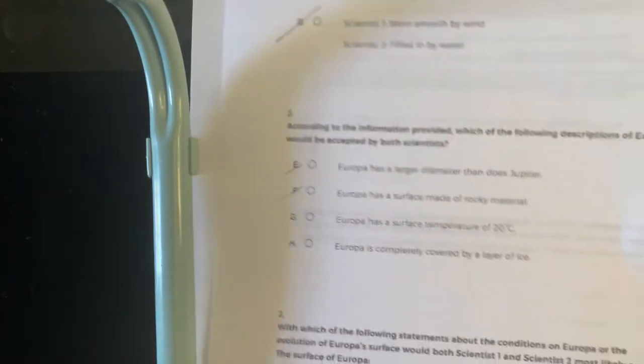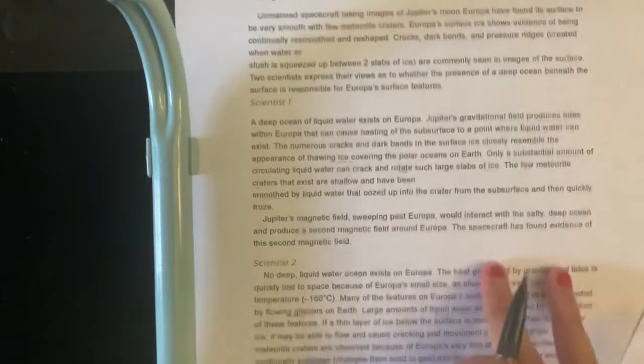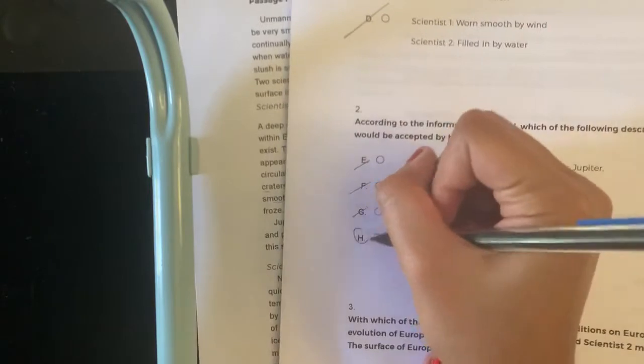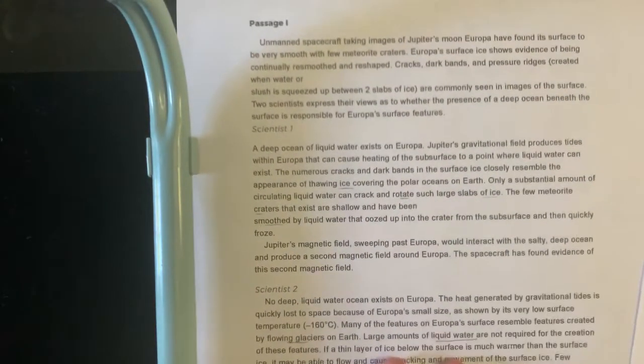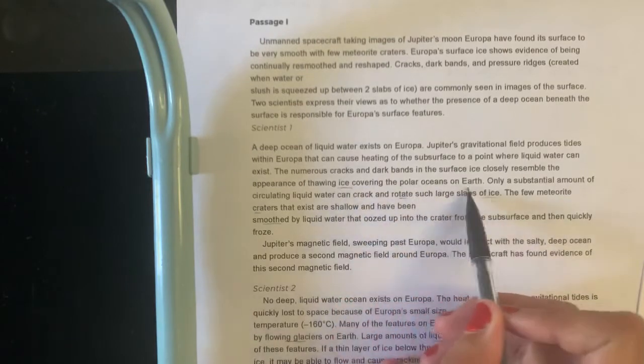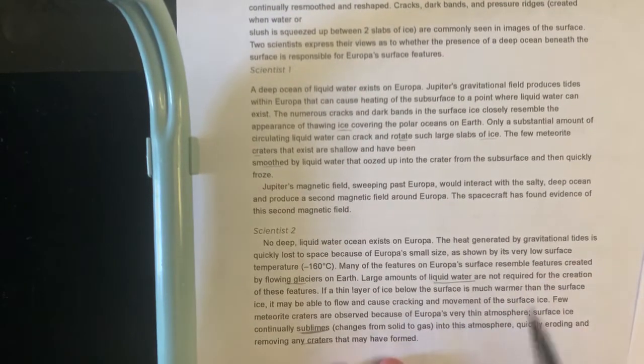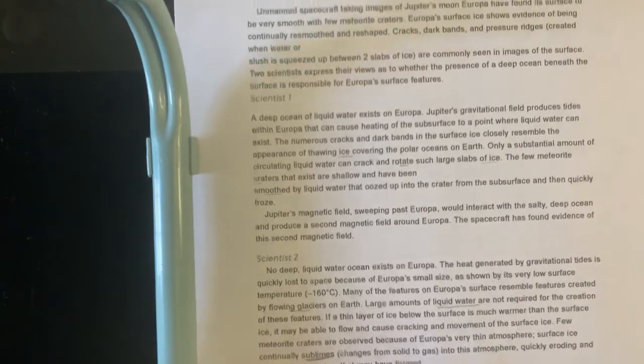Europa has a surface temperature of 20? No, it says right here the surface temperature is that, so it's not. So H is really the only one left, and it makes sense because it's completely covered by a layer of ice. They say right here the thawing ice covering the polar oceans, and then large amounts of liquid water are not required, so it means there's ice.